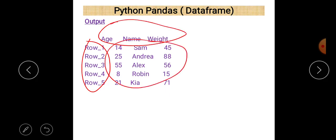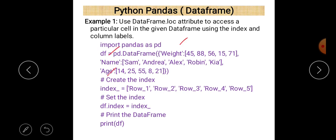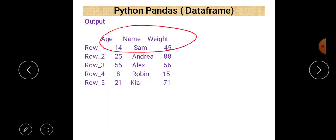One thing to remember: when you create a DataFrame using a dictionary, order doesn't matter because dictionary is an unordered data type. Keys are associated with their values so columns can appear in any order. Also, if no value is found for a particular cell, NaN will appear — NaN represents 'Not a Number'.